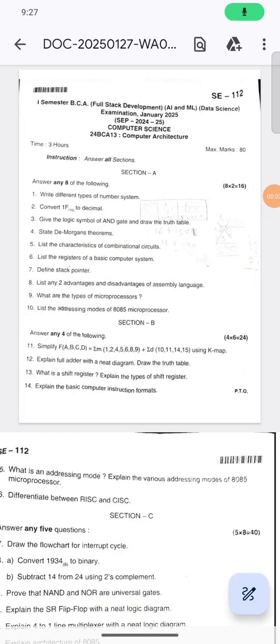Hi everyone, you are watching Math Tech 15. In this video, I am sharing the BCA first semester Bangalore University January 2025 question paper for Computer Science Computer Architecture. The question paper pattern is here: timing is three hours, maximum marks 80, with multiple sections.